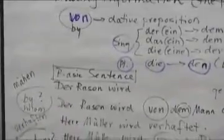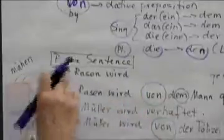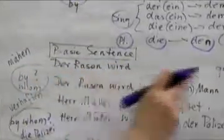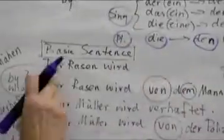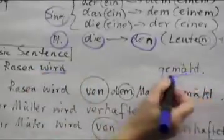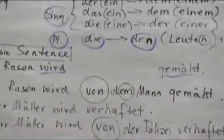Now, I'm going to give you a basic sentence. The basic sentence says, der Rasen wird gemäht. The lawn is being mowed. You remember that, right? Der Rasen wird gemäht. And the past participle is always at the end of the phrase.